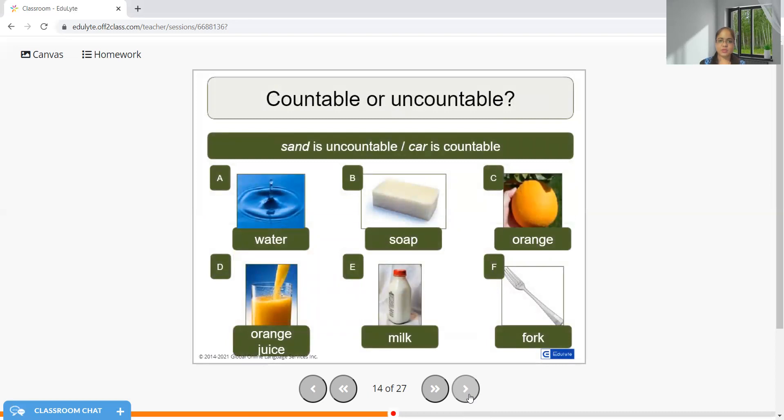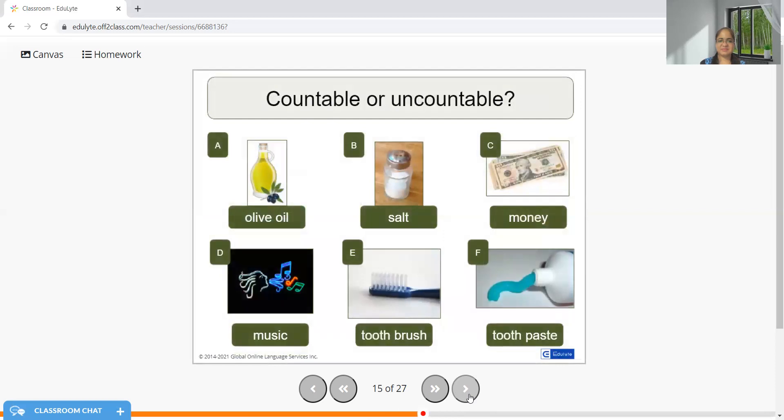Some more examples which will help you identify whether these are countable or not: water, juice, milk, uncountable. Orange, fork, countable. Olive oil, music, money, uncountable. Money is countable—you can count—but the word money will have only M-O-N-E-Y as the correct spelling. There is no word like M-O-N-E-Y-S or M-O-N-I-E-S; it's absolutely wrong.